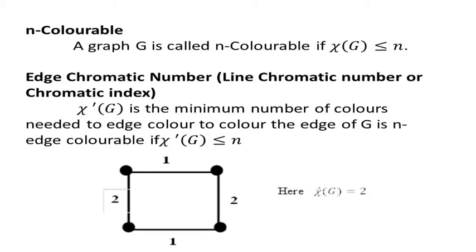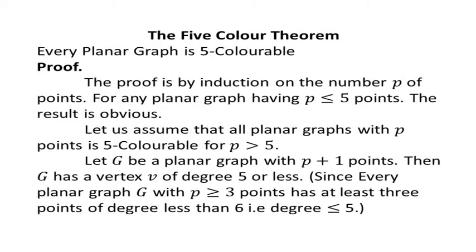Here I am using the graph with four vertices, that is the cycle C4. This graph needs two colors. Because it contains four edges, chi'(G) is 2. Similarly, a graph is said to be n-edge colorable if chi'(G) is less than or equal to n.